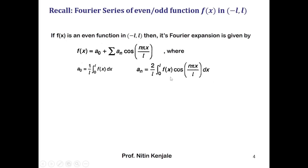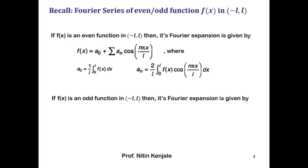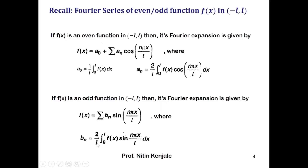And a_n equals 2/l times the integral of f(x) cos(nπx/l) dx over 0 to l. Similarly, if f of x is an odd function in the interval minus l to l, then its Fourier series expansion is given by summation b_n sin(nπx/l), where a naught and a_n take value 0, and b_n equals 2/l times the integral of f(x) sin(nπx/l) dx over 0 to l.